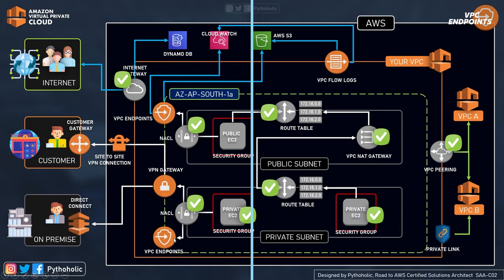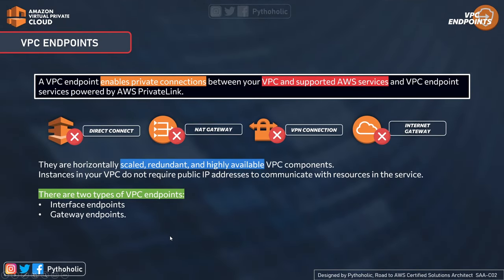The biggest question here is: what is a VPC endpoint? A VPC endpoint enables private connections between your VPC and supported AWS services, powered by AWS PrivateLink. A VPC endpoint does not require an internet gateway, NAT device, VPN connection, or even an AWS Direct Connect connection. They are horizontally scaled, redundant, and highly available VPC components, and this is a private connection.